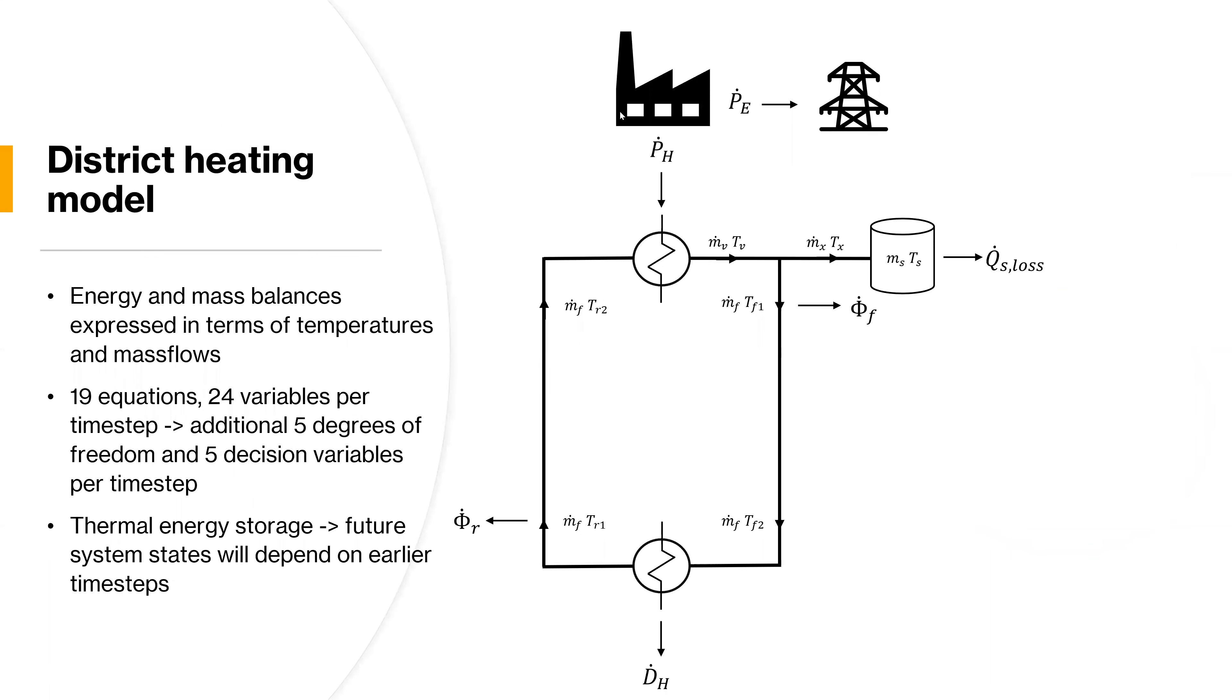Okay, so now on to the model that we have, our test model for an initialization procedure. It's a basic district heating model. We have a combined heat and power plant producing some heat supplied to the district heating transmission network. And it's also producing some electricity, which is supplied to the grid. Overall, it's expressed in terms of mass and temperatures, mass flows and temperatures in the system.